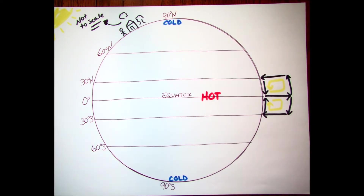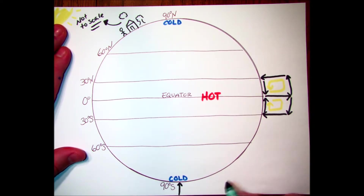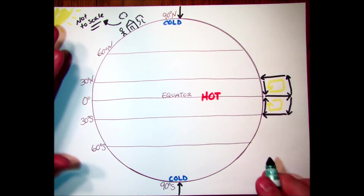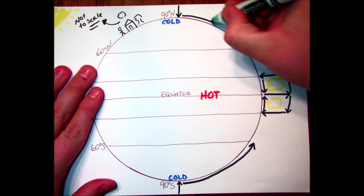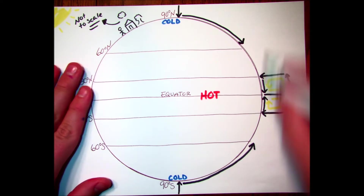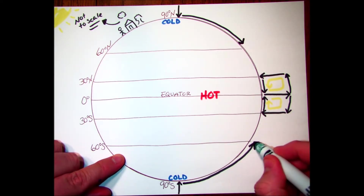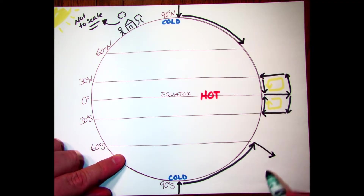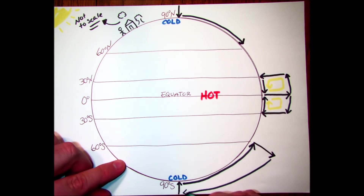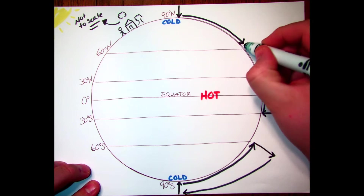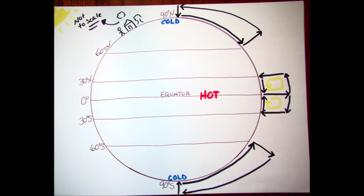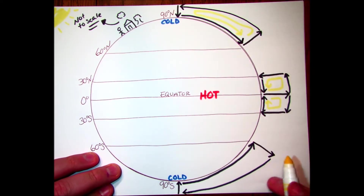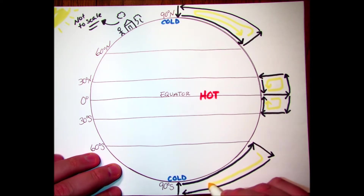Wherever it's cold — starting at the north and south poles — we have sinking air. When that sinking air hits the surface it spreads out along the surface and travels toward the equator. Before it even reaches the equator it warms up, starts to rise, and circulates back, forming another convection cell.